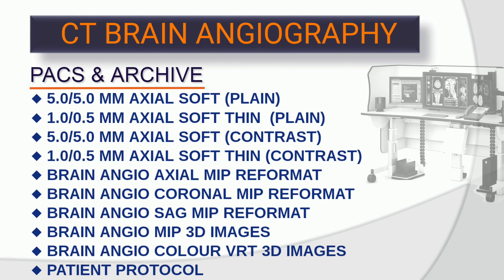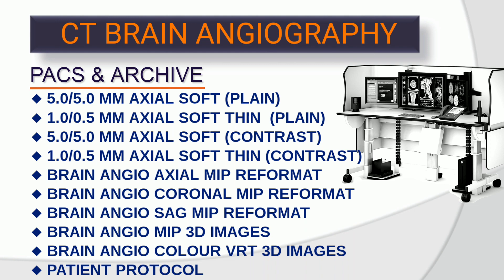Data for PAX and archive: 5x5 mm axial soft plane, 1x0.5 mm axial soft thin plane, contrast 1x0.5 mm axial soft thin, 1x0.5 mm XV11 3D images, brain angio color VRT 3D images, and patient protocol.